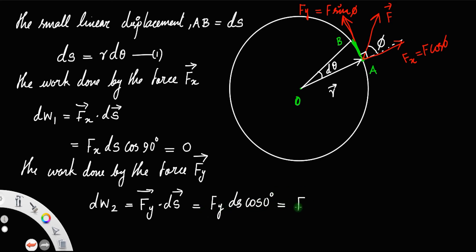And you know, Fy equal to F sin phi. F sin phi, ds equal to r dθ, r dθ, cos 0 equal to 1 into 1. This implies dW2 is equal to, this can be written as r F sin phi dot dθ.